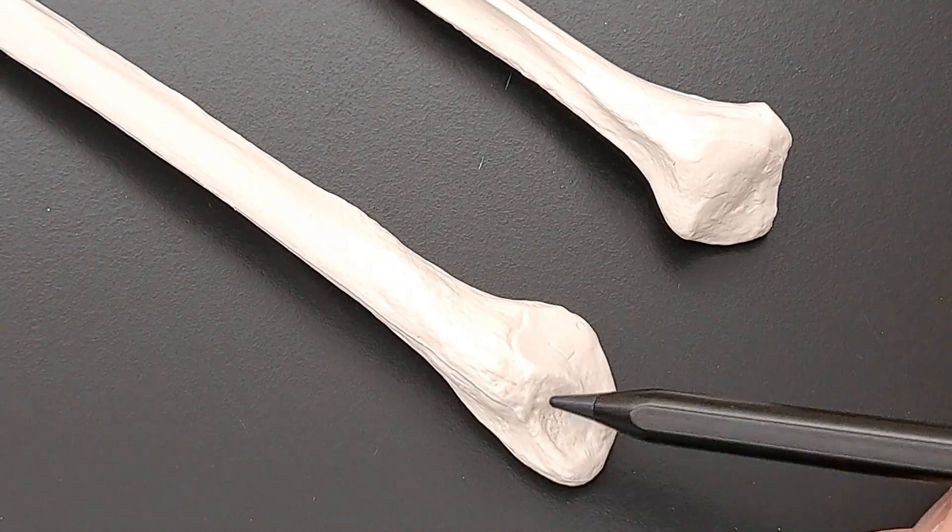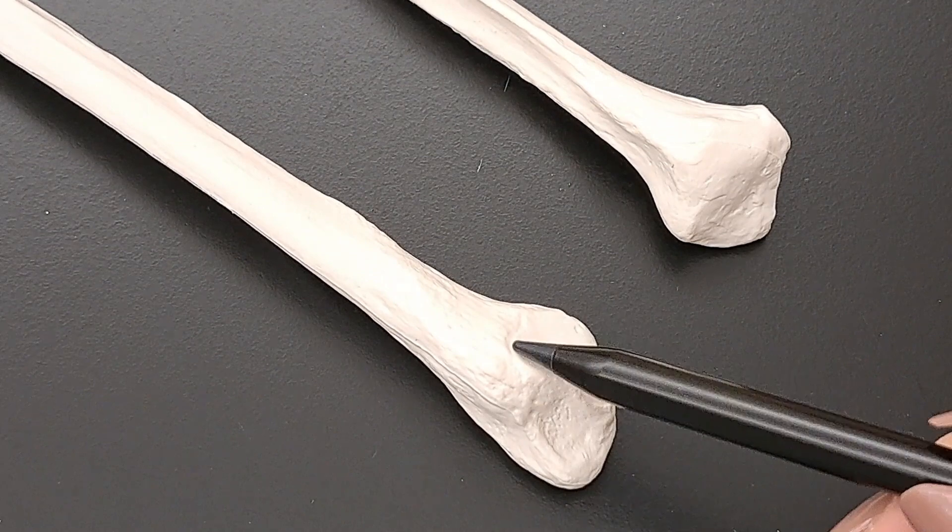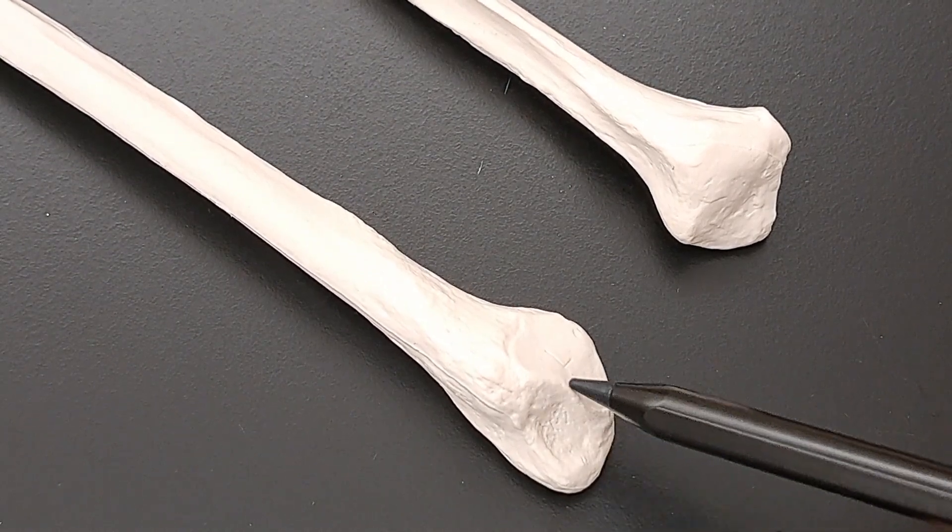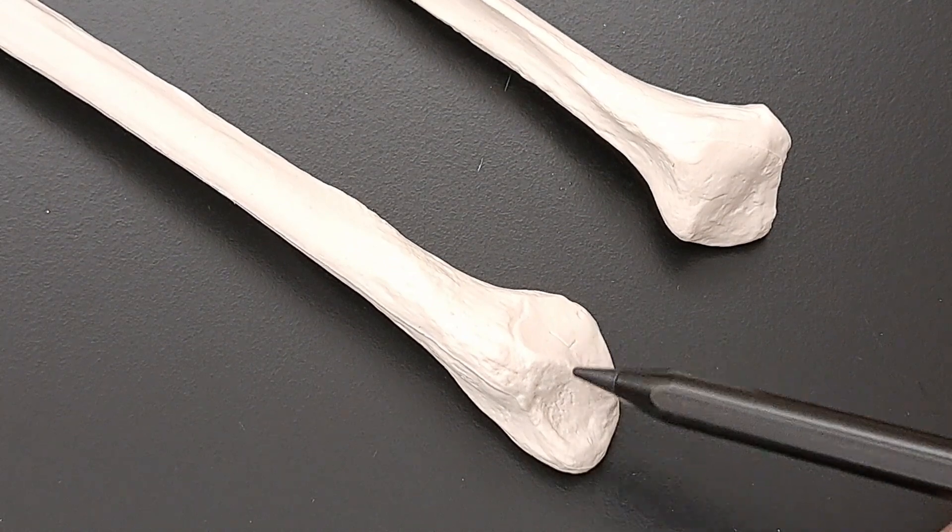Whereas the medial aspect of the other end has two surfaces on it. You can see this right here is a surface and this is another surface with a line or a ridge separating the two surfaces right here.